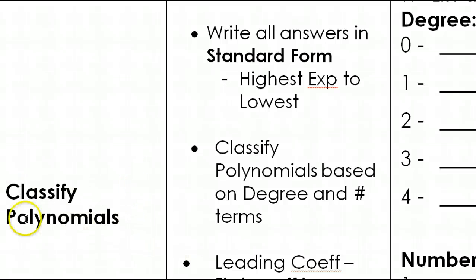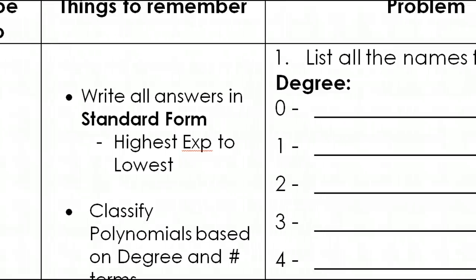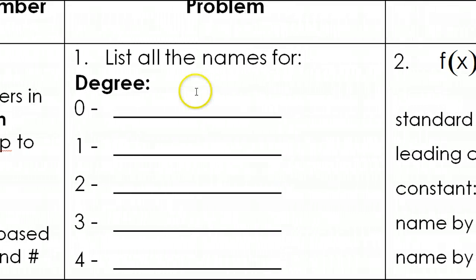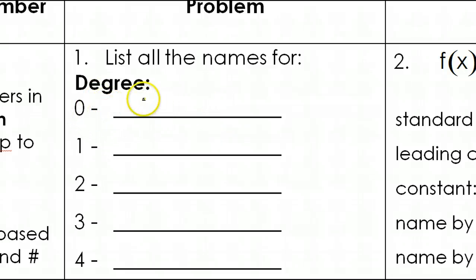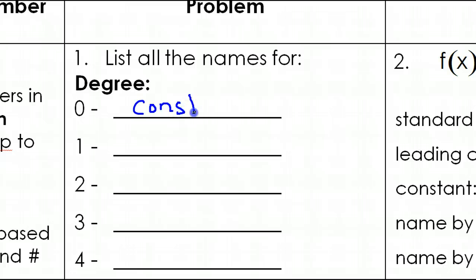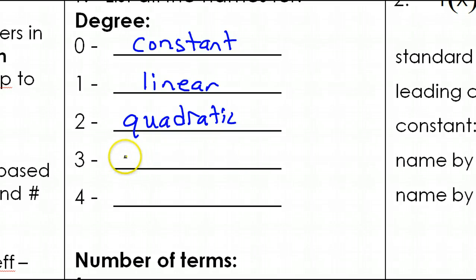One of the things we learned was how to classify polynomials. Let's review that. Classifying polynomials — one way is by degree. If the degree is 0, that is a constant. If the degree is 1, that is linear. If the degree is 2, that is quadratic. If the degree is 3, that is cubic. And if the degree is 4, that is quartic.